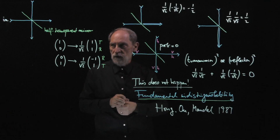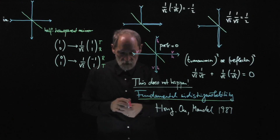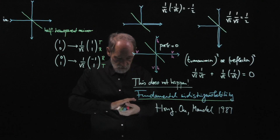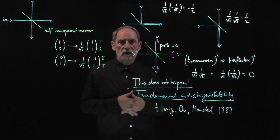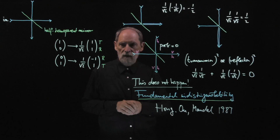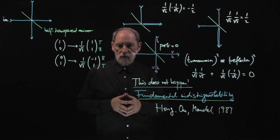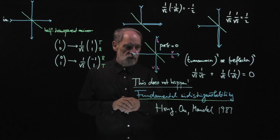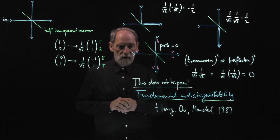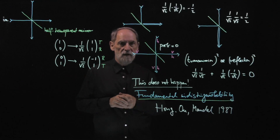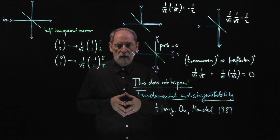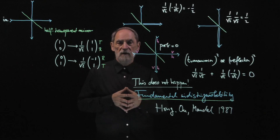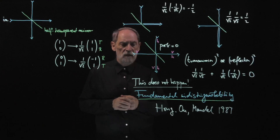Indistinguishability is important not only for photons in situations like this, but also in many other contexts. Electrons are all the same — we cannot distinguish two electrons. They are indistinguishable particles, and this has all kinds of consequences in atomic physics, in chemistry, for the stability of matter, and so forth. This is not a nuisance; it is an enrichment of physics that comes about because elementary objects are so simple that we cannot tell them apart — they are fundamentally indistinguishable.